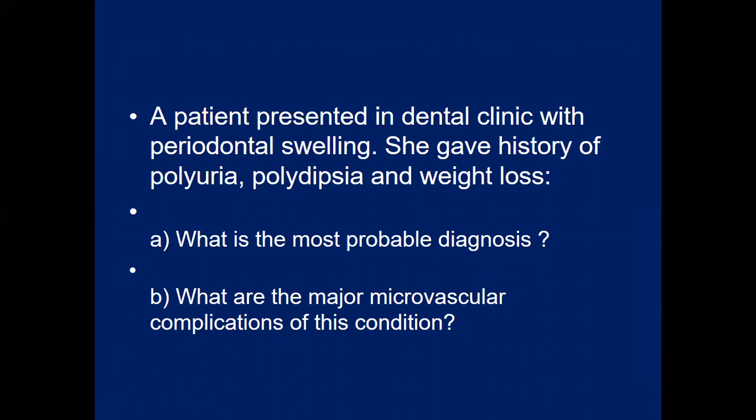A patient presented in a dental clinic with periodontal swelling and gave a history of polyuria, polydipsia, and weight loss. From these features you can diagnose the case as likely diabetes mellitus. You may then be asked about the major microvascular complications of this condition, which we discussed in the previous lecture — remember both macrovascular and microvascular complications when attempting any exam question related to diabetes.